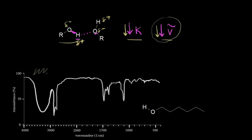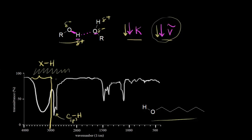Looking at the IR spectrum for 1-hexanol — this is the region for bonds to hydrogen. Drawing a line at 3,000 here, just below 3,000 we see the carbon-hydrogen bond stretch where the carbon is sp3 hybridized. But this very broad signal over here is due to the O-H bond. This oxygen-hydrogen bond gives us a very broad signal on our IR spectrum because of hydrogen bonding. Usually you're going to see this signal somewhere around 3,500 to 2,900 wave numbers.